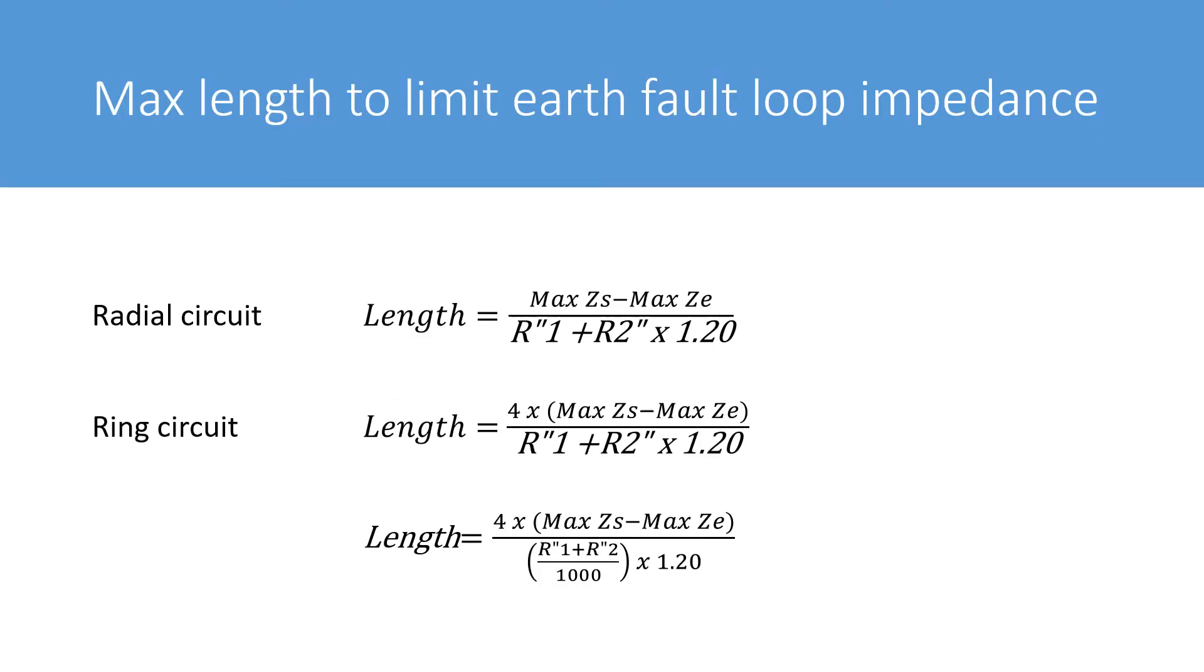So here we have an example of the calculation for the maximum length for both radial and ring circuits. For circuits wired in a ring, when we are measuring to the farthest point of the circuit, it's necessary to add a multiplier of 4 to the equation to allow for the loop of the circuit.